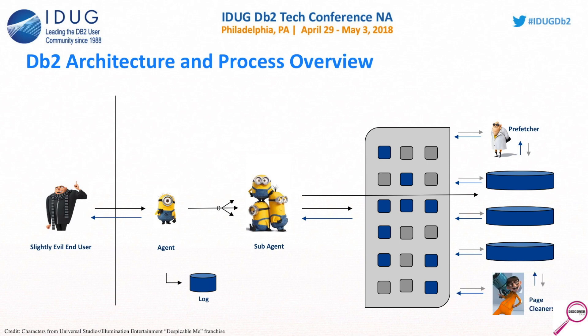Independent of all these processes are the page cleaners. The page cleaners are always looking at the buffer pool pages to see what's committed and not committed, and if there is anything that makes sense to pull back out of the buffer pool — freeing that memory and pushing it back out to disk.